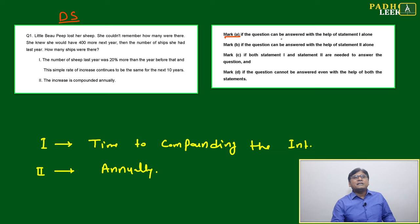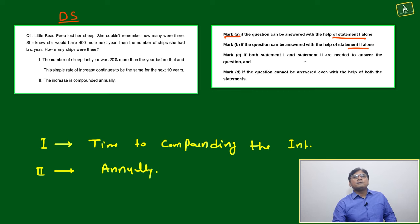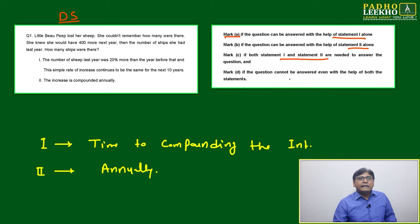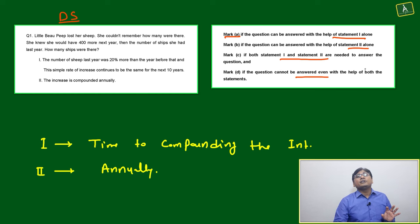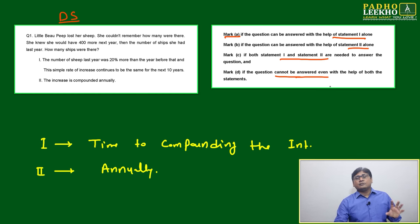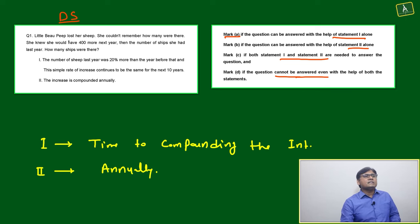Four options are given: mark A if the question can be answered with Statement 1 alone; mark B if it can be answered with Statement 2 alone; mark C if both statements together are needed; and mark D if even combining both statements is not sufficient to answer the question.